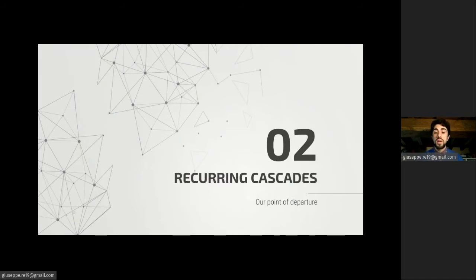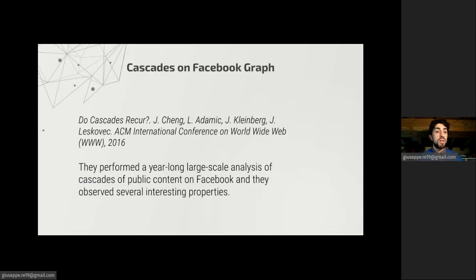Our point of departure are recurring cascades. More precisely, the work Do Cascades Recur, presented by Cheng, Adamic, Kleinberg and Leskovec at this conference in 2016. In this work, they performed a year-long large-scale analysis of cascades of public content on Facebook, and they observed several interesting properties of those cascades.